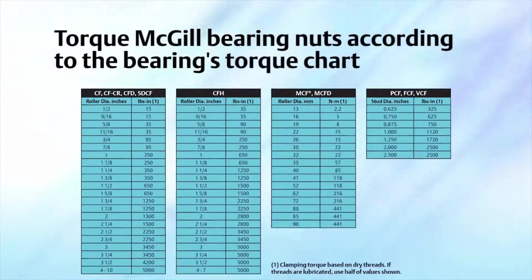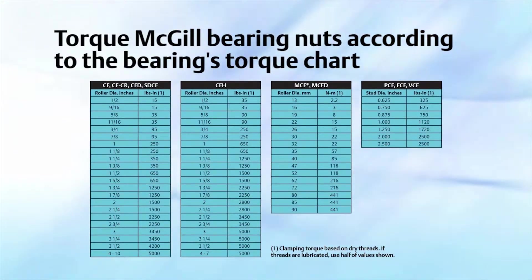Excessive torque can result in stud elongation or fracture. Inadequate torque can allow the cam follower to become disassembled from the housing. Keeping the proper torque as shown in the bearings chart will maintain clamping pressure adequate to lock the stud in place, keeping the bearing in its intended position.